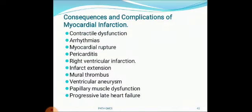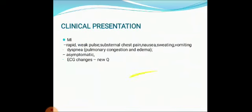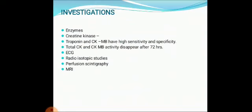The consequences and complications of myocardial infarction include contractile dysfunction, arrhythmia, myocardial rupture, pericarditis, right ventricular infarction, infarct extension, mural thrombus, ventricular aneurysm, papillary muscle dysfunction, and progressive late heart failure. The clinical presentation includes rapid weak pulse, substernal chest pain, nausea, sweating, vomiting, dyspnea due to pulmonary congestion, edema, and sometimes it can present asymptomatically with ECG changes and a new Q wave seen on ECG. Investigations include enzyme assays — creatine kinase, troponin, and CKMB have high sensitivity and specificity; total CK and CKMB activity disappear after 72 hours. Other investigations include ECG, radioisotope study, perfusion scintigraphy, and MRI.